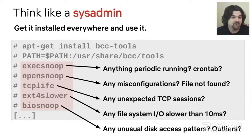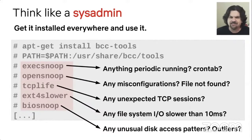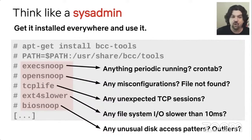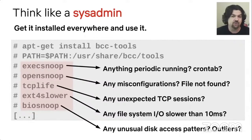TCPlife is another great tool for finding performance problems, and you can look for unexpected TCP sessions. Ext4slower characterizes storage system performance by showing you the latency at the file system level, where it matters to the application. Biosnoop you can use to look for unusual disk latency patterns, and so on — there are many tools.